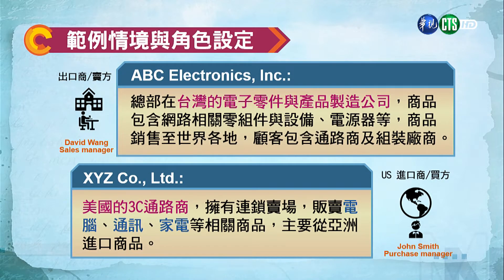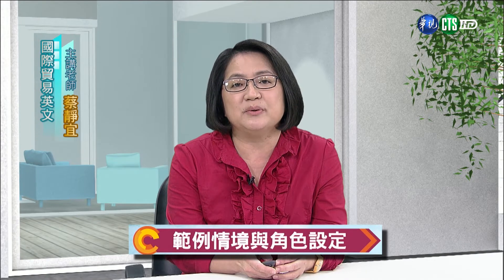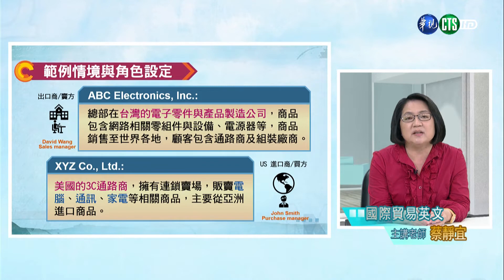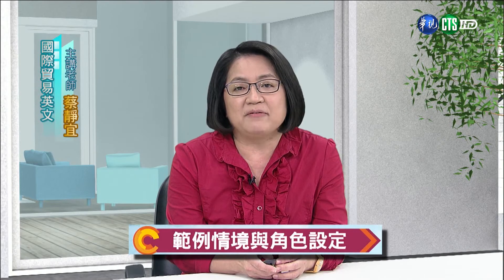ABC Electronics Inc是一家總部在臺灣的電子零件與產品製造公司，商品包含網路相關零組件與設備、電源器材等等，銷售到世界各地，顧客包含通路商以及組裝廠商。